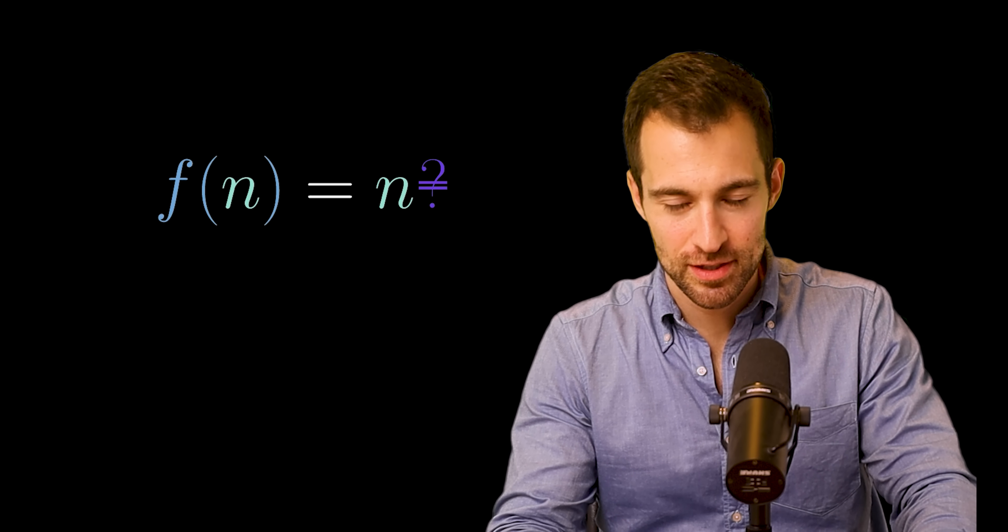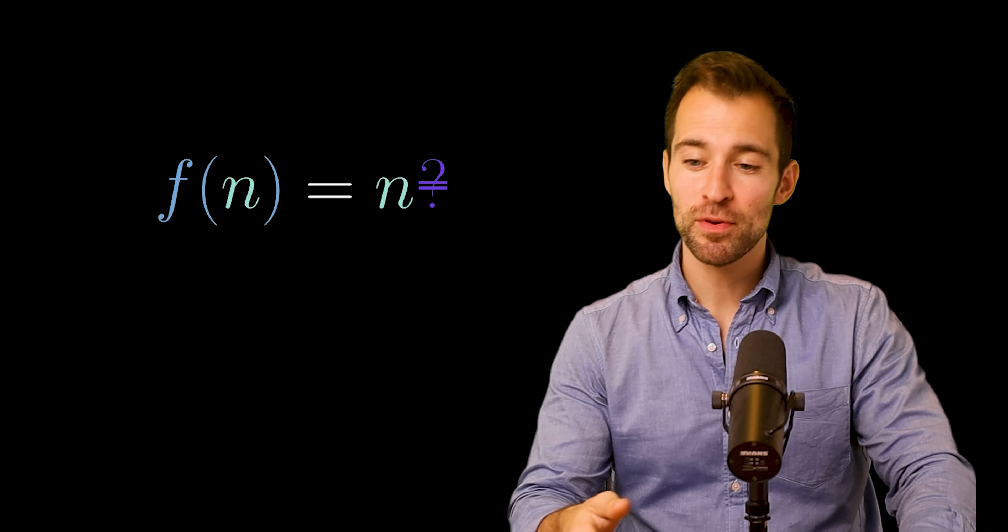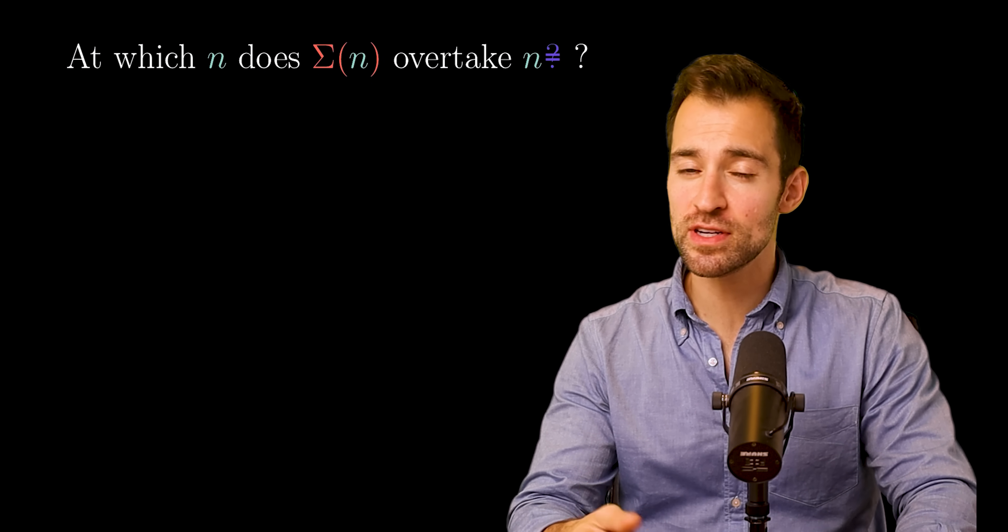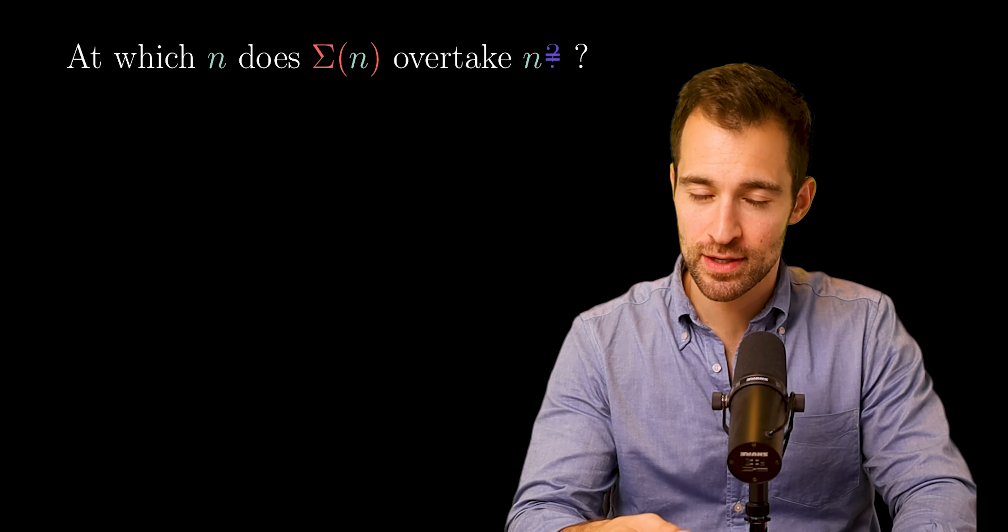It's not even close. Sure, for small n, my function is larger. But beyond a certain n, the busy beavers are totally out of sight. In fact, at which end does the busy beaver sequence surpass my sequence?